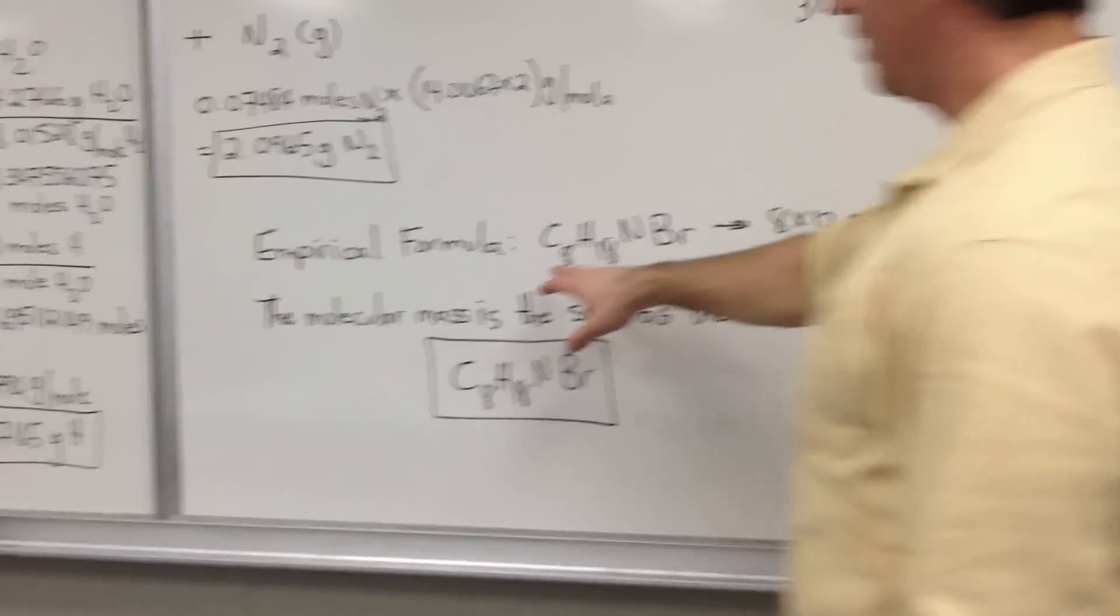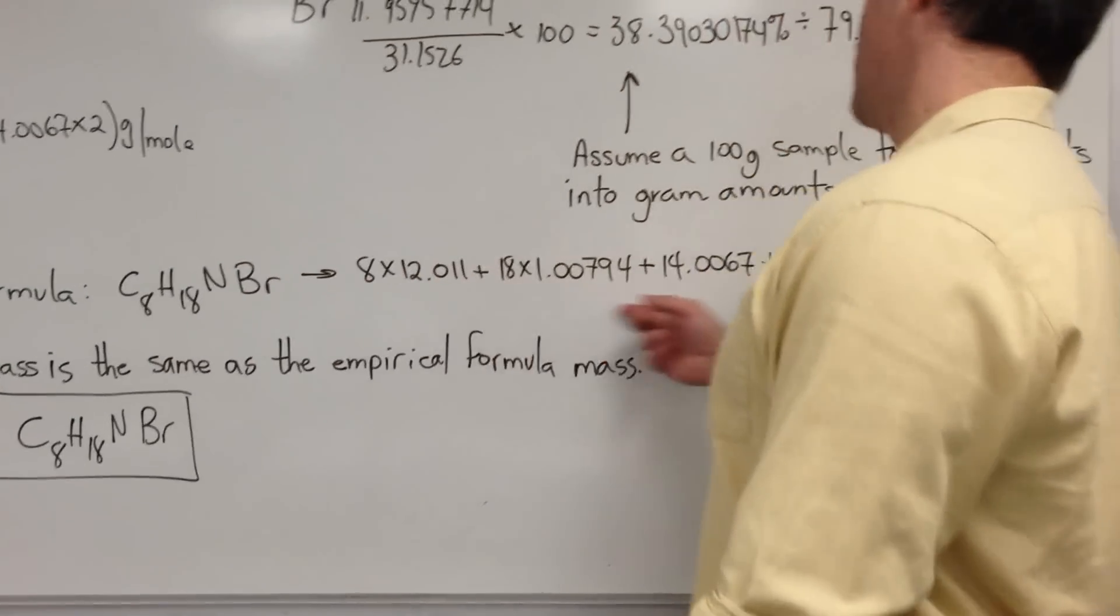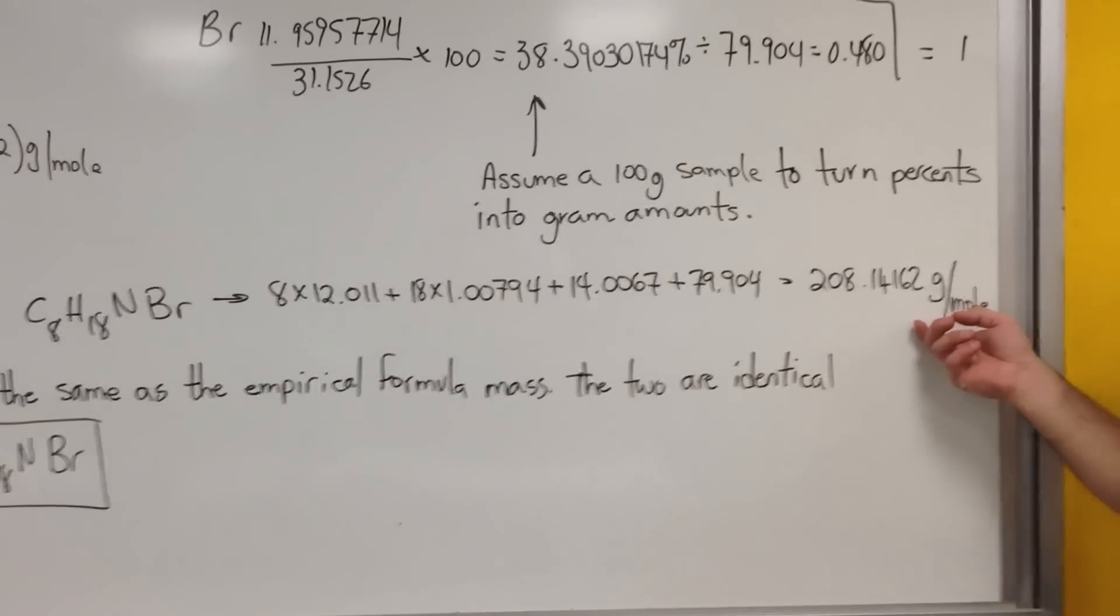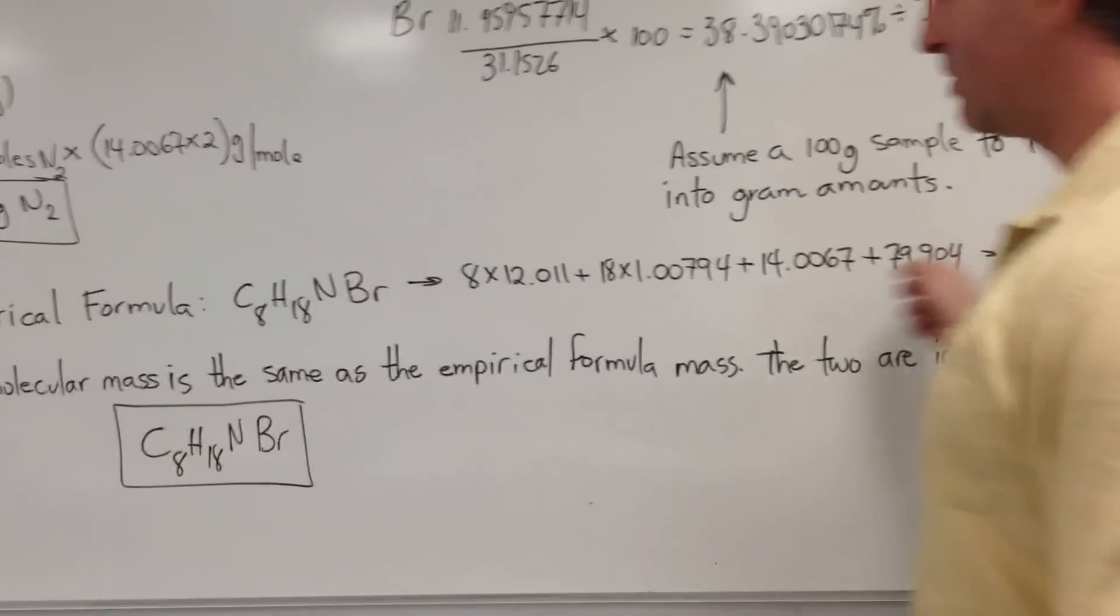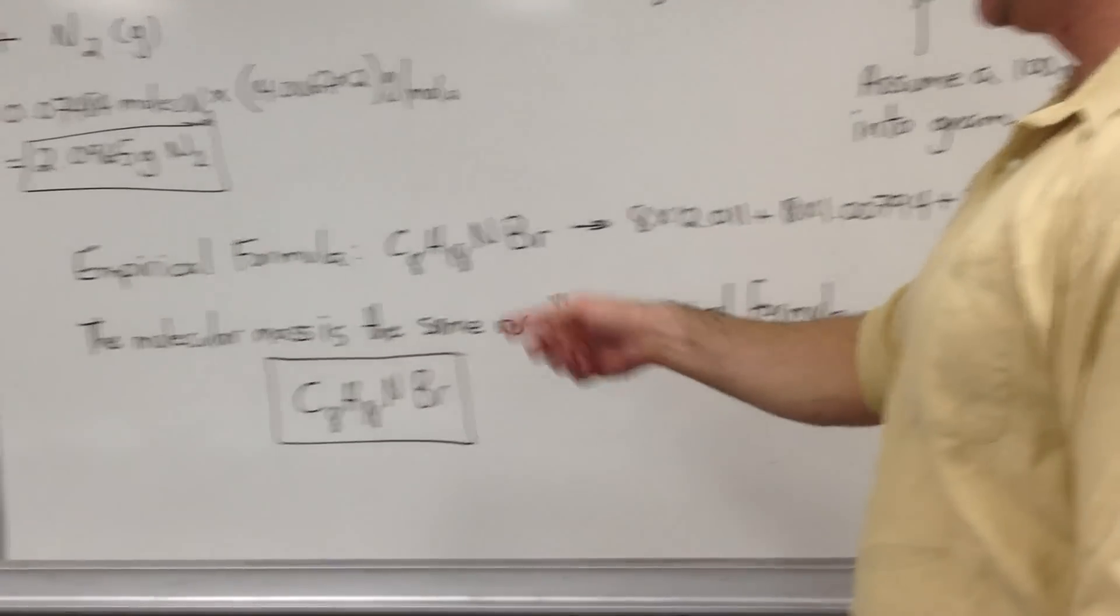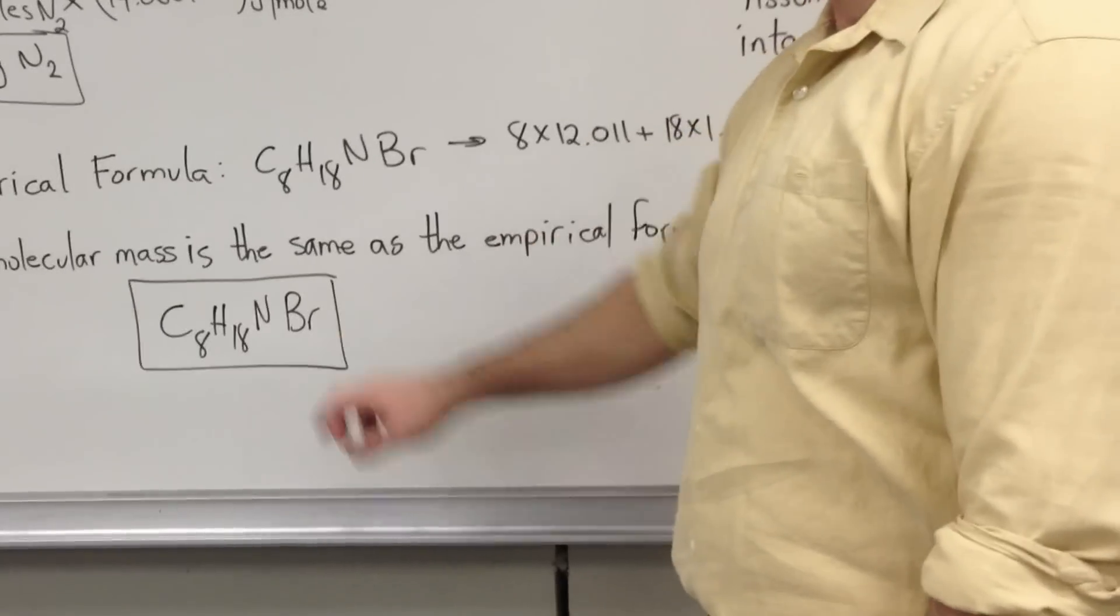The empirical formula then is C8H18NBr. When we add up all these numbers to give the molar mass, we find out that the empirical formula weight is the same as the molecular mass. So the molecular formula is the same as the empirical formula in this case.